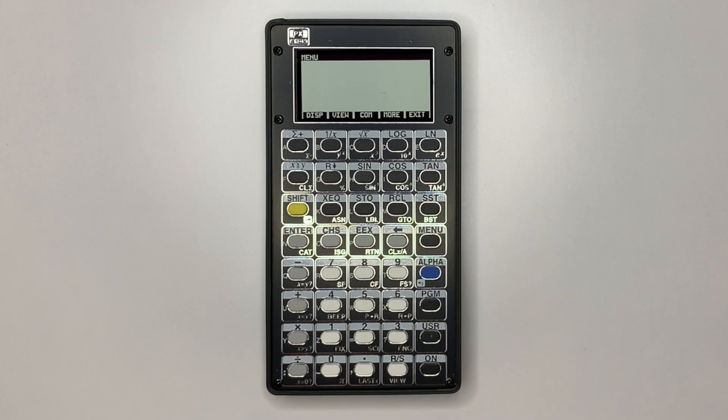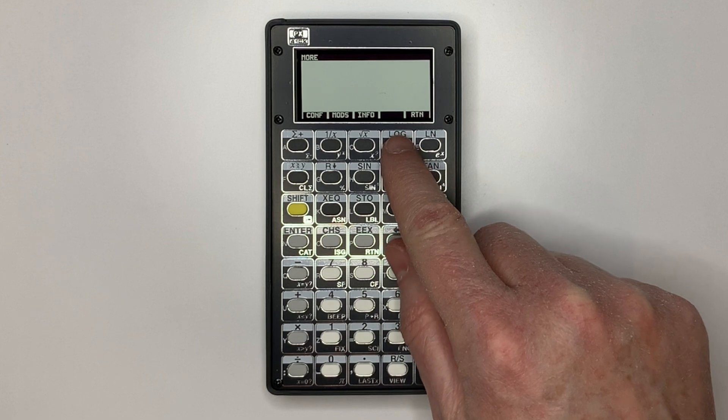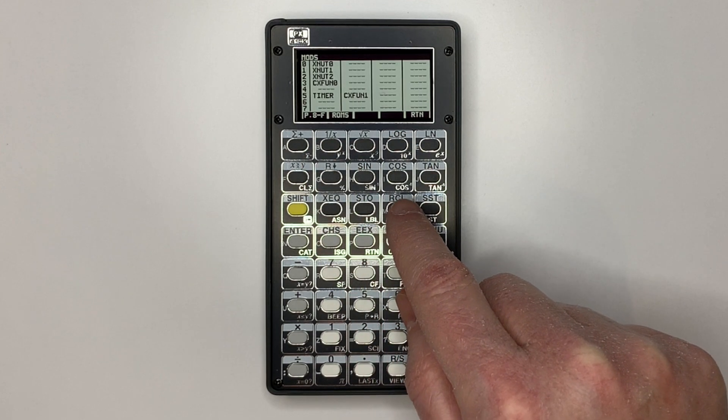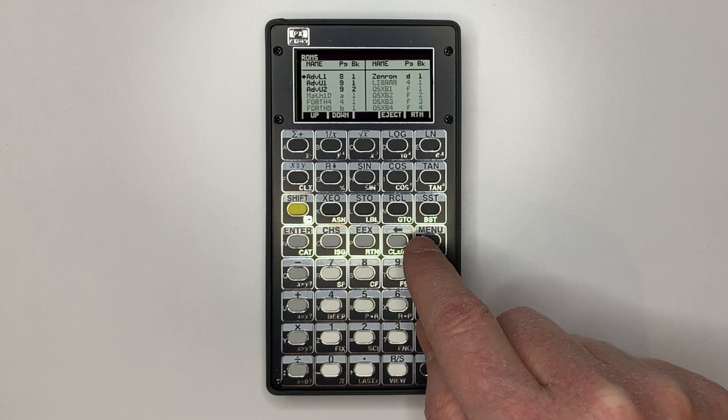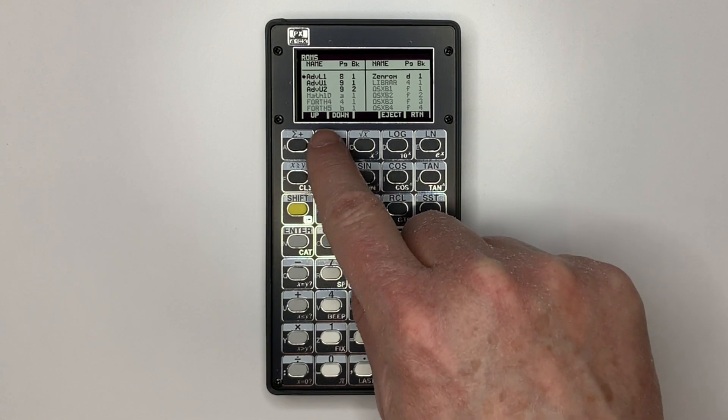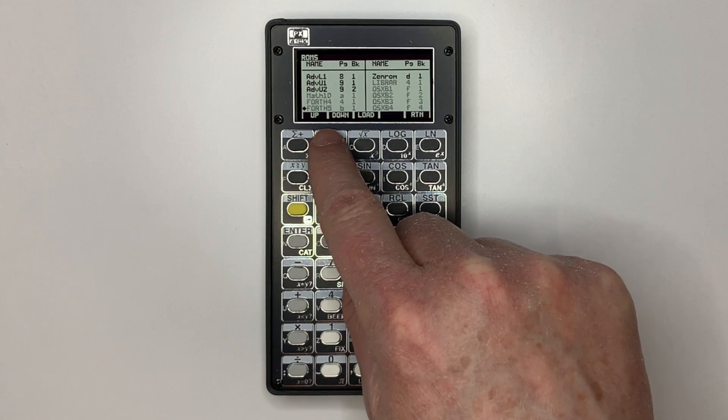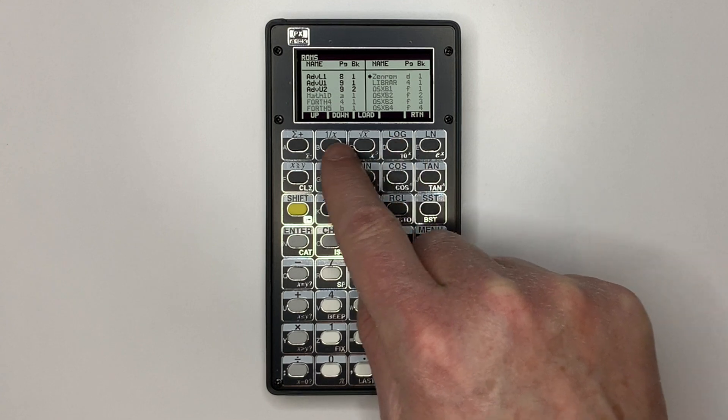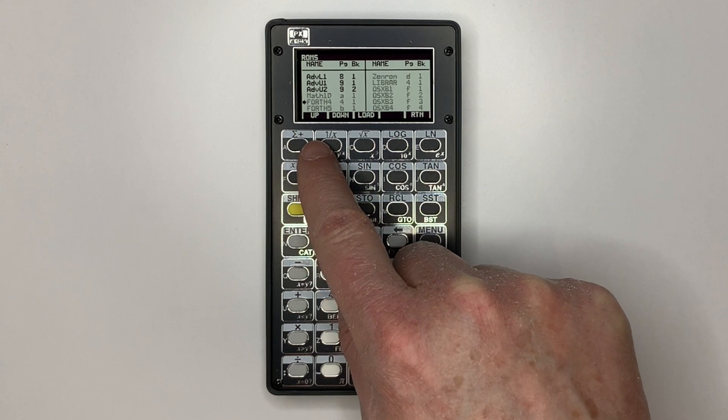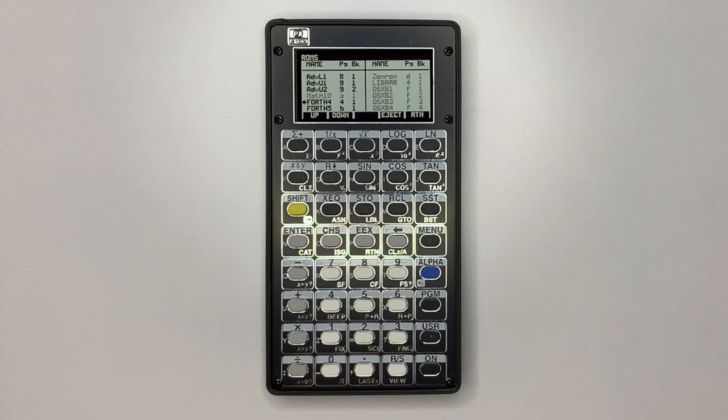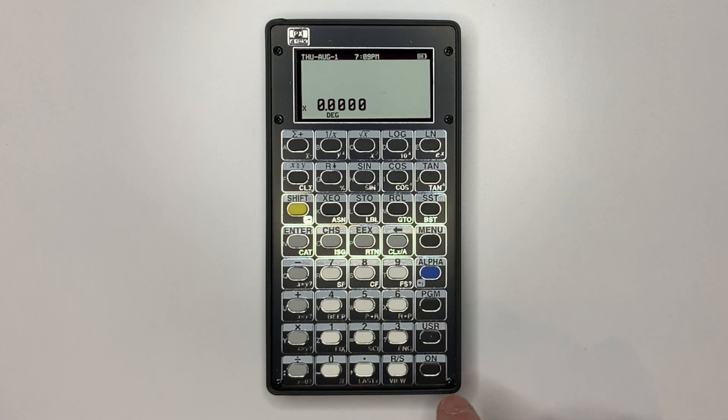Let's change modules again. I'll remove ZenROM and plug in Forth. Forth uses a page 4 and another page that can be anywhere else. We load that, exit the menu, power cycle. You can see the custom splash screen I've changed from the default.